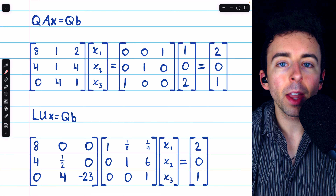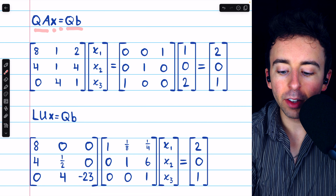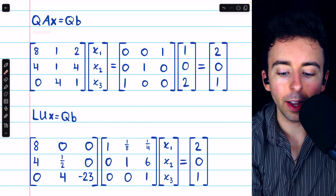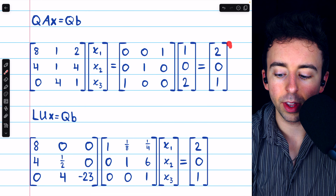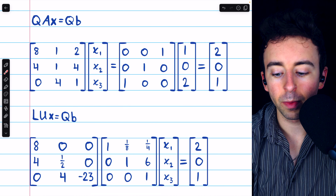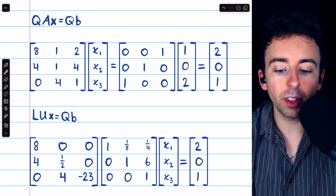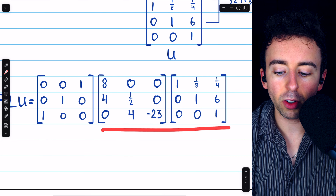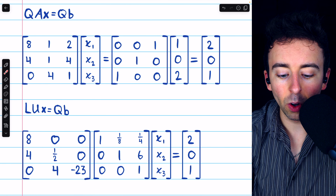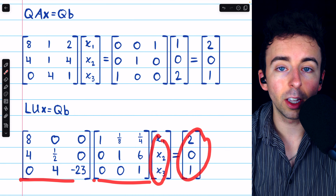Now we're prepared to solve the system. AX equals B was rewritten as QAX equals QB. Q times B is the constant vector with rows 1 and 3 swapped. Q times A is the coefficient matrix with those rows swapped. We use the LU decomposition: we replace Q times A with L times U. There's L, there's U, there's our variable vector, and there is QB.